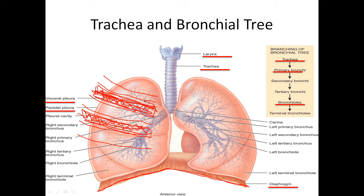Your rib cage is helping with respiration. If someone has an injury with broken ribs or a crushed rib cage, they're going to have a hard time breathing because the rib cage acts like a semi-rigid chamber that helps draw air in and out of your lungs. So those intercostal muscles are very important.